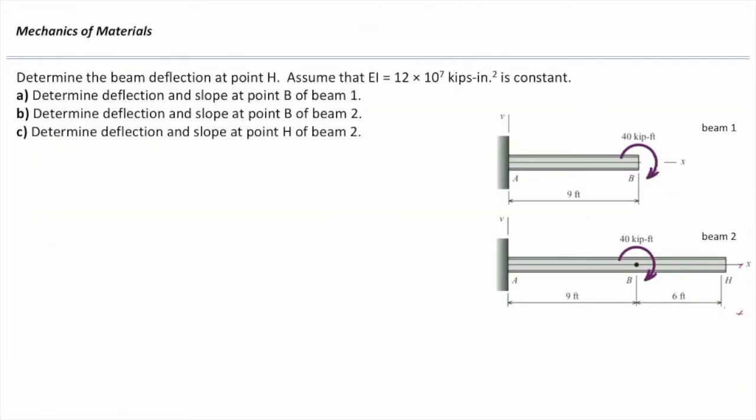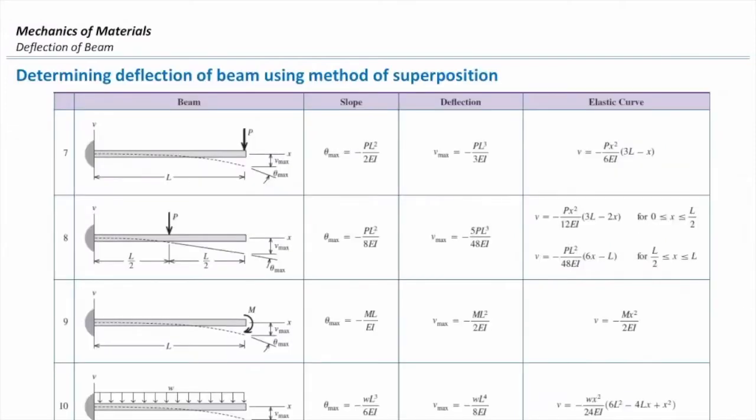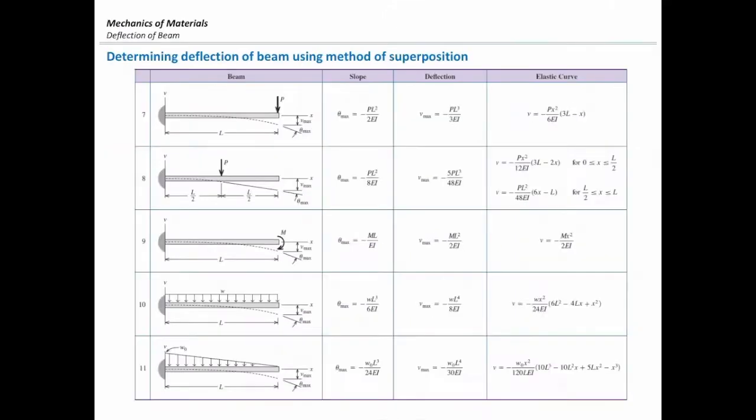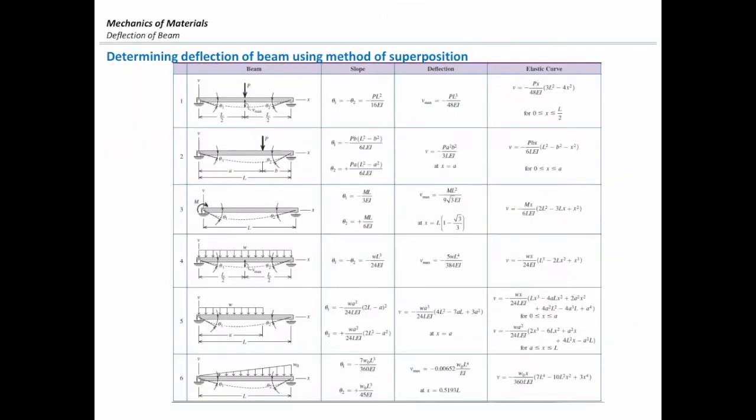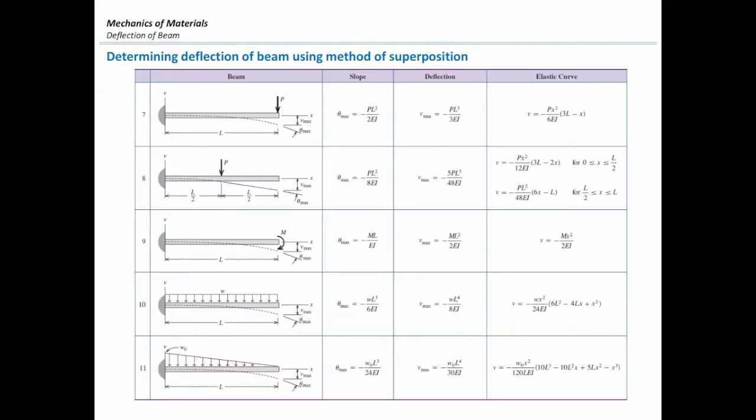Let's do that for the very first beam, the cantilever beam, which is subjected to a moment at the right end. To determine that, we need to find the appropriate equation from the table. Let me get back to the table and see which one works for this equation. This table is about cantilever beams, and this one is for simply supported beams. Which one should I go for? Definitely this one, because it's a cantilever beam.